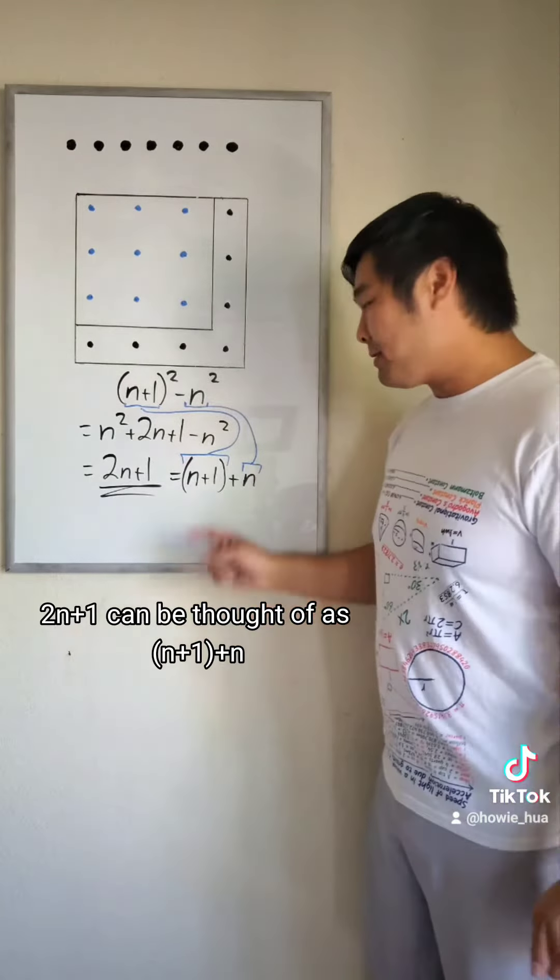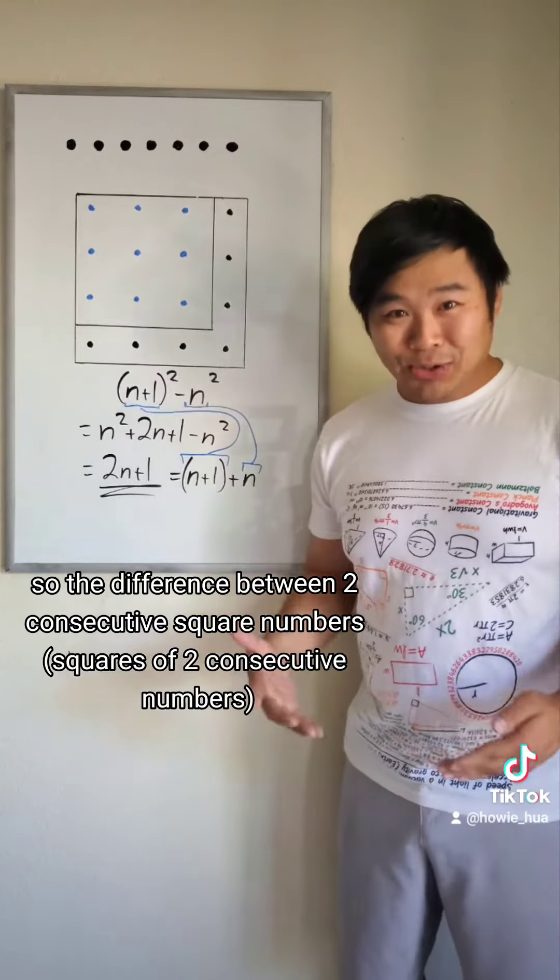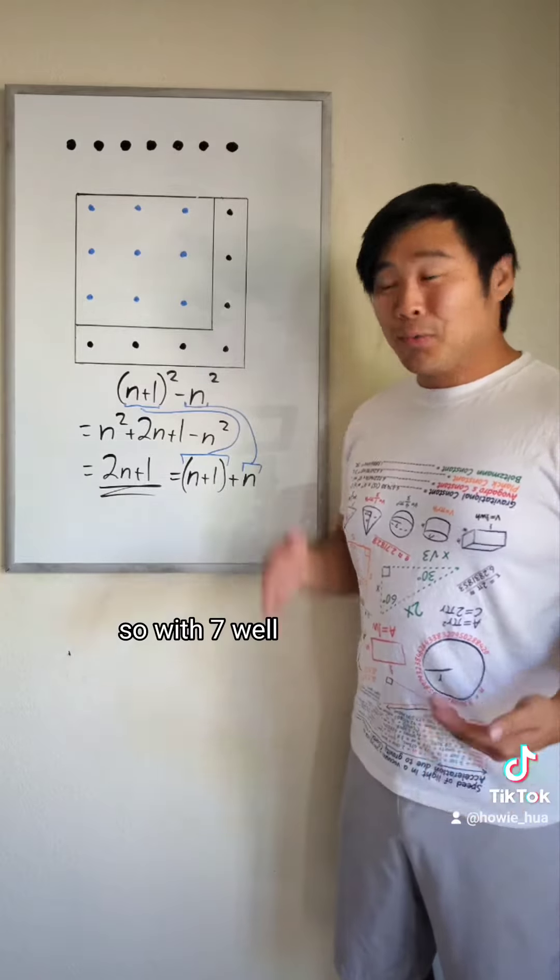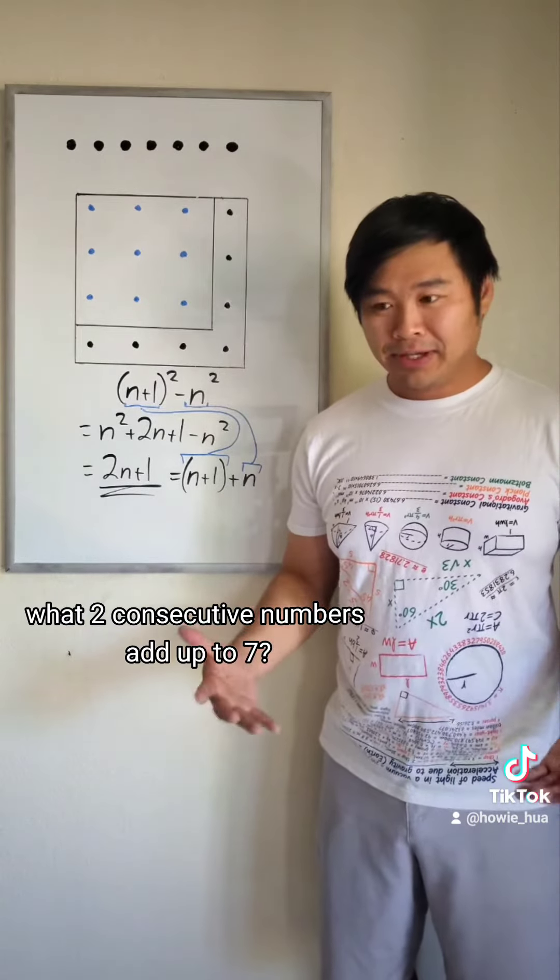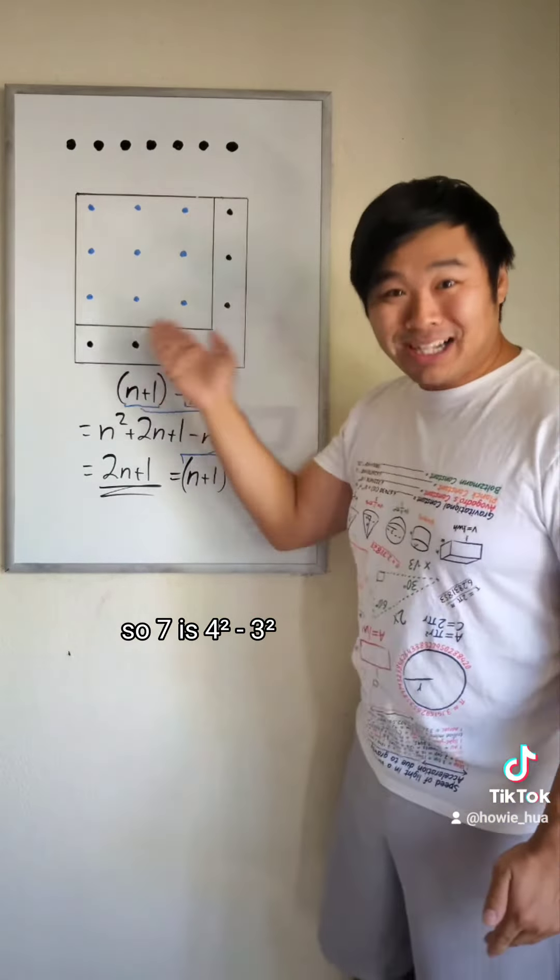2n plus 1 can be thought of as n plus 1 plus n. So the difference between two consecutive square numbers is just the sum of their bases. So with 7, what two consecutive numbers add up to 7? Well, 3 and 4. So 7 is 4 squared minus 3 squared.